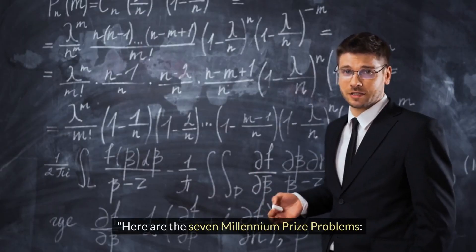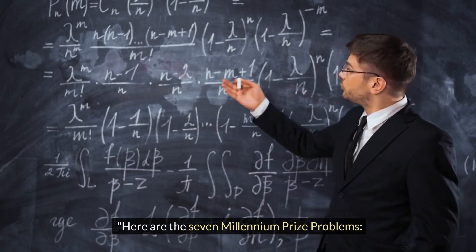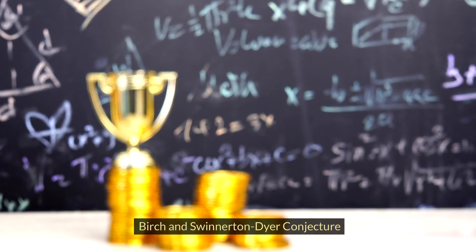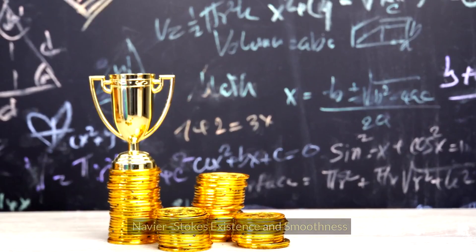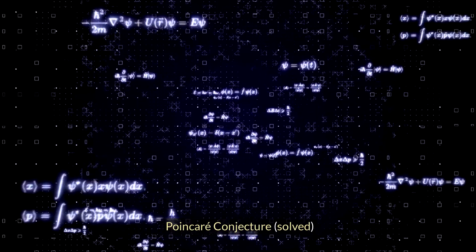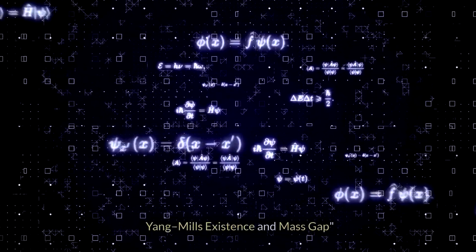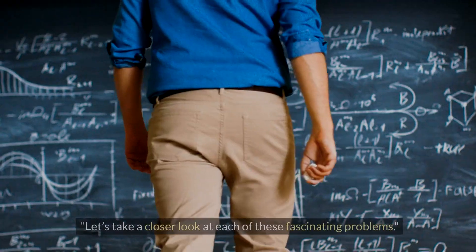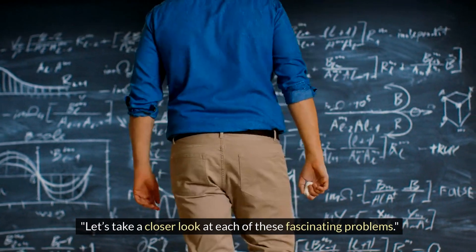Here are the seven Millennium Prize Problems: Birch and Swinnerton-Dyer Conjecture, Hodge Conjecture, Navier-Stokes Existence and Smoothness, P versus NP Problem, Poincaré Conjecture (solved), Riemann Hypothesis, Yang-Mills Existence and Mass Gap. Let's take a closer look at each of these fascinating problems.